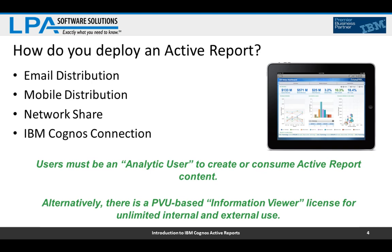For mobile users in the iOS or Android space, there's a free Cognos application you can download from the appropriate store. When installed, it makes your mobile device's email system aware that MHT files should open in the IBM Cognos app. It takes the MHT file from email and runs it in the mobile application — it doesn't open in a browser, it uses the IBM Cognos app.